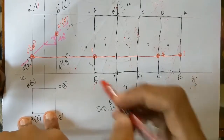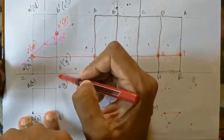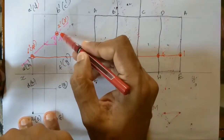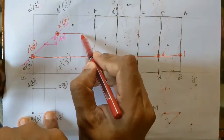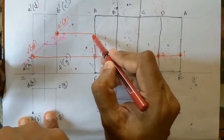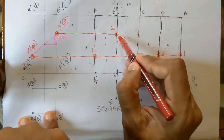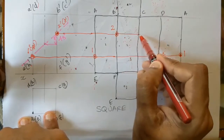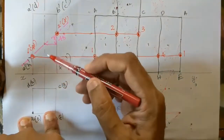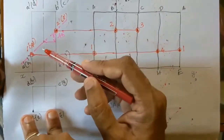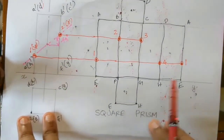Point 2' lies on edge B'F', and point 3' lies on edge C'G'. So we have all four section points: 1 on edge AE, 2 on edge BF, 3 on edge CG, and 4 on edge DH — four section points in total, one on each vertical edge of the prism, to be projected into the development.